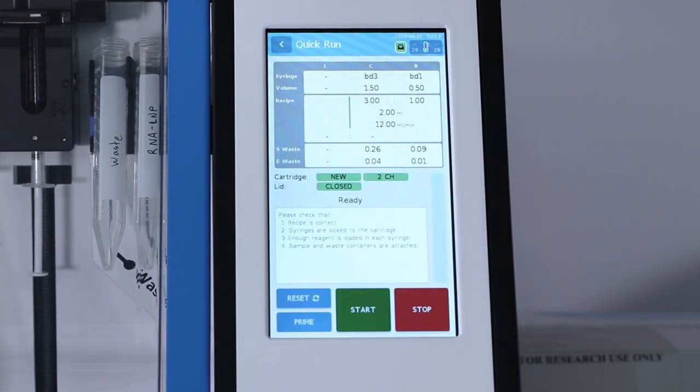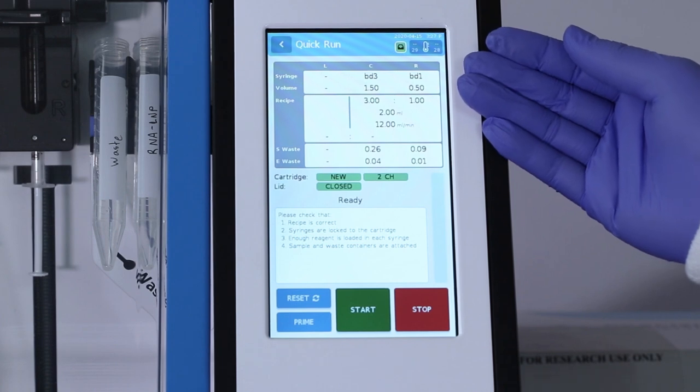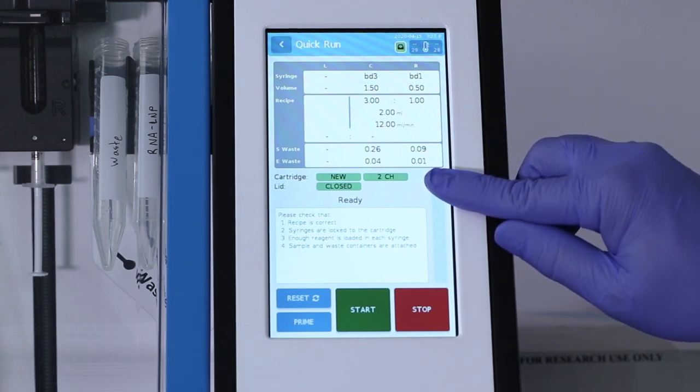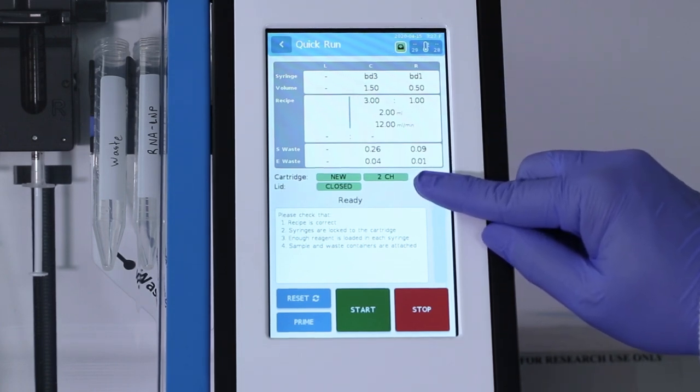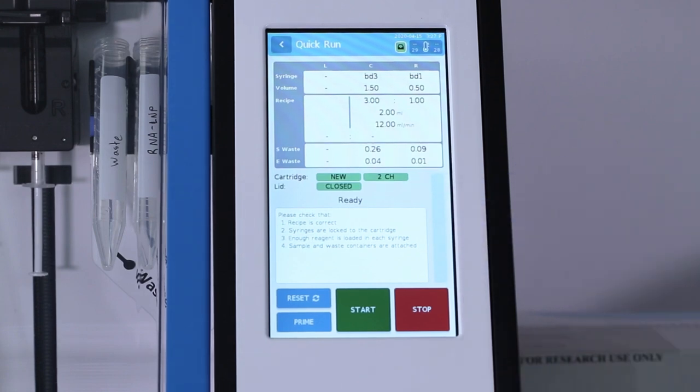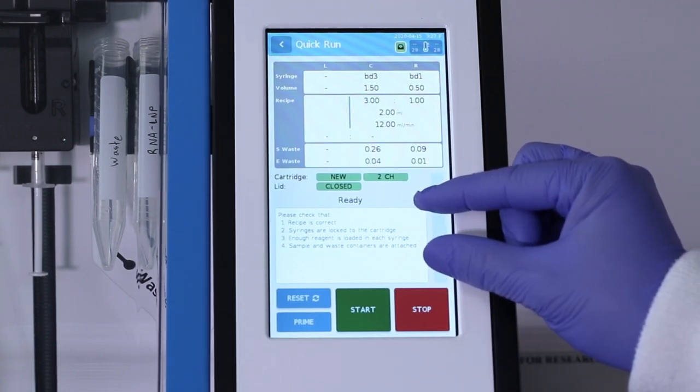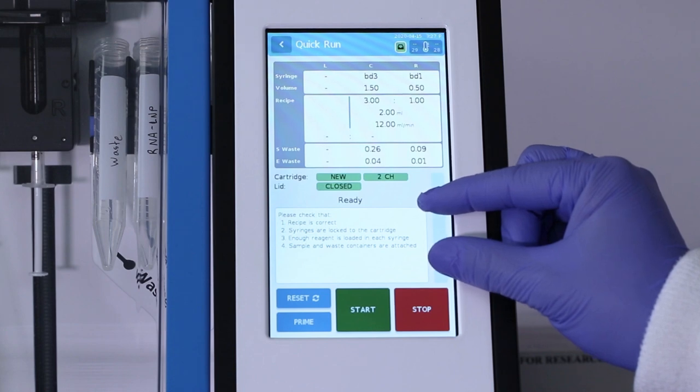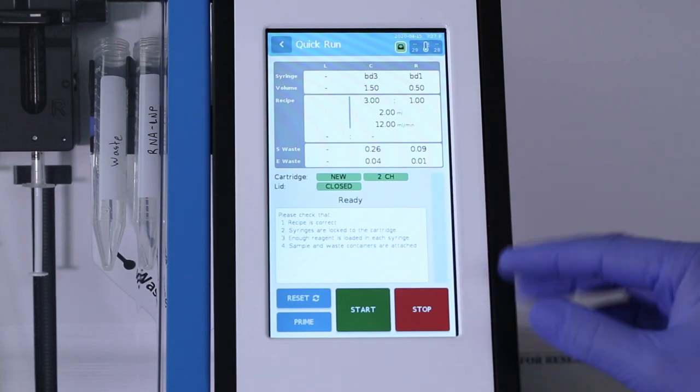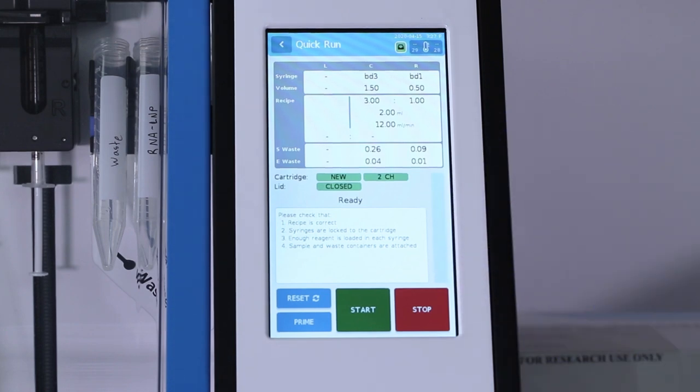Hit Next. And here you'll see a summary of your formulation. And an indication that your formulation is ready to go. You have a new cartridge. It's the correct type of cartridge. And your lid is closed. It'll also ask you to check that your recipe is correct. Your syringes are locked into the cartridge. You've loaded enough reagent. And we've done all of that. And so with that, I can just press Start.